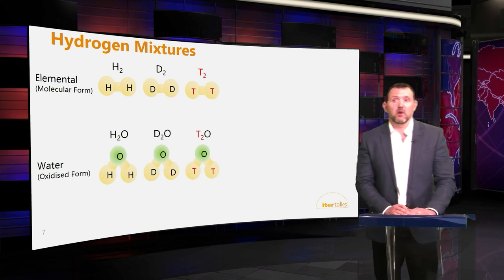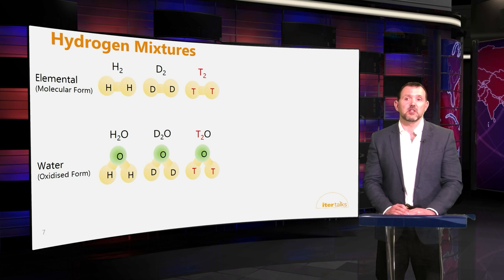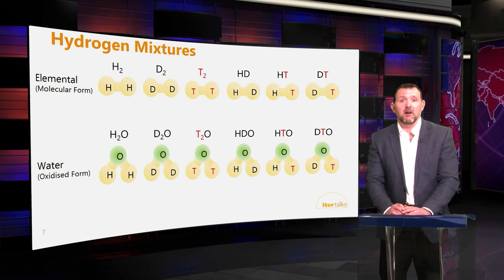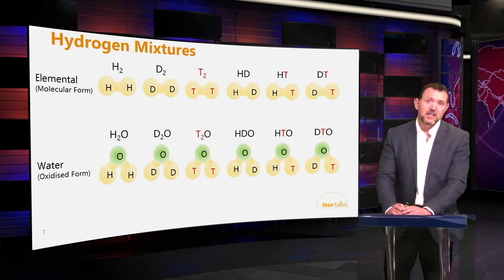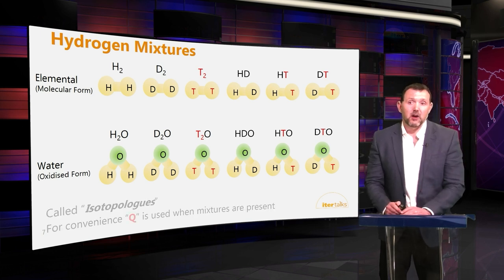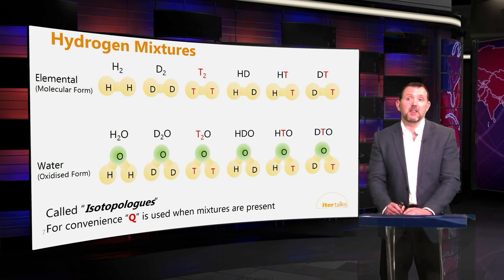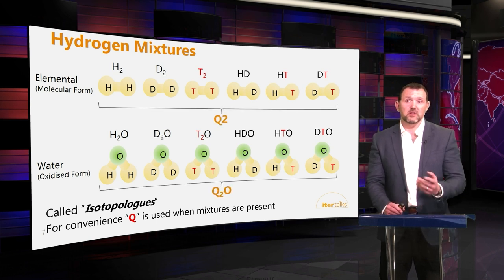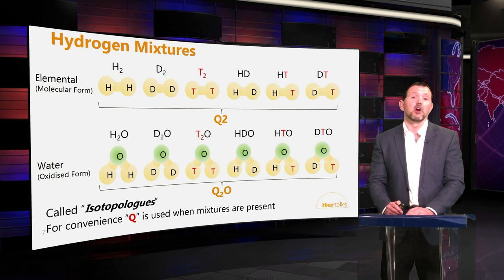These molecules with the various isotopes can get mixed up to form mixtures: one protium and one deuterium forming HD, likewise protium and tritium forming HT, and deuterium and tritium forming DT. The same happens with water and organics. These mixtures are called isotopologues, and instead of writing out all six we borrow the letter Q, so you'll see Q2 to mean the six isotopologues of the elemental hydrogen form and Q2O for water.